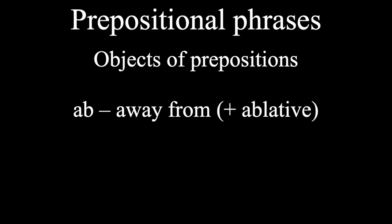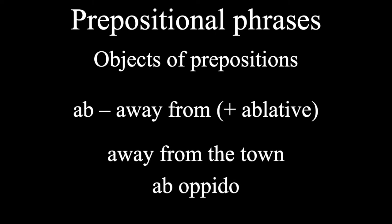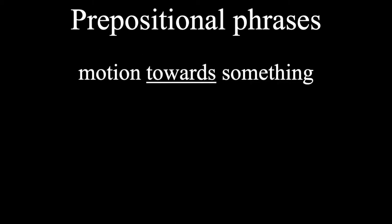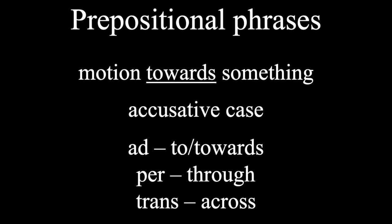Ab means away from and is followed by the ablative. And actually these two phrases demonstrate one general rule about prepositions in Latin. Prepositions that tell you where you're going will be followed by an accusative, like the prepositions ad, per, and trans.